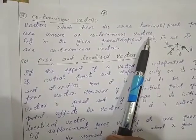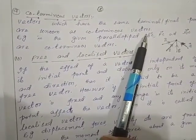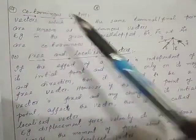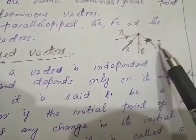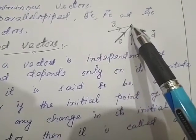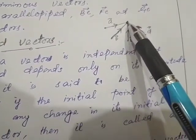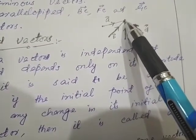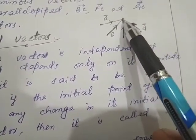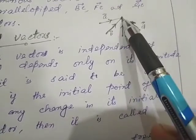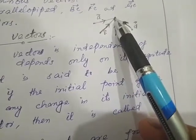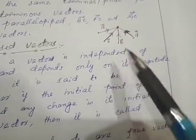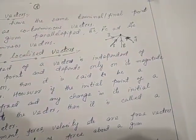Vectors which have the same terminal or final point are known as co-terminus vectors. For example, looking at the given figure, vectors A, B, C, and D all originate from different points but their final point is the same — so these four vectors have the same destination, and we call them co-terminus vectors.